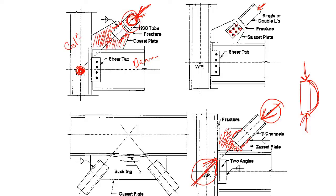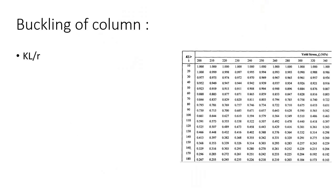So this gusset plate acts like a column. If your column is not strong enough, under this compressive load it will buckle. How do we check this buckling, or how can you ensure that your gusset plate has sufficient strength against this compressive load?